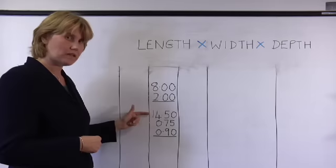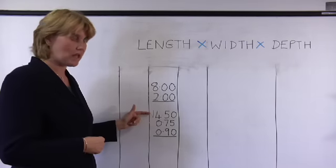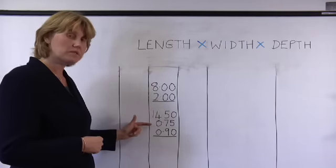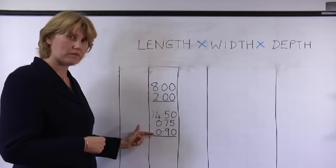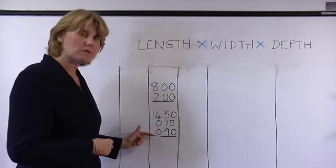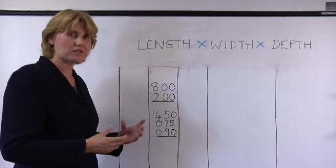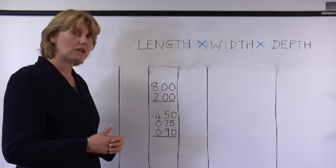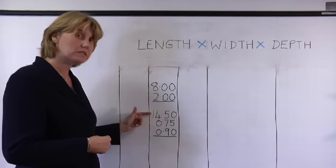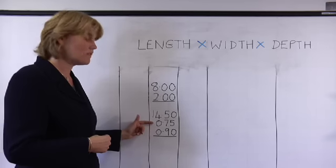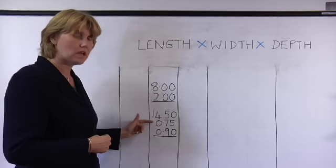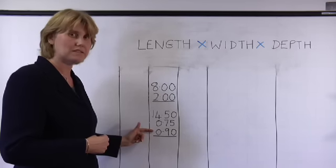Our second example is a cubic measurement. Here we have the length times the width times the depth. If we imagine the physical quantity that this represents, say excavation of a trench, we have a trench which is 14.5 metres in length, 715 millimetres wide, and 900 millimetres deep.